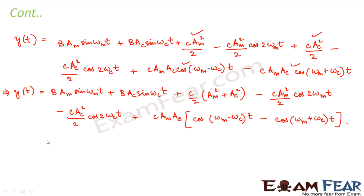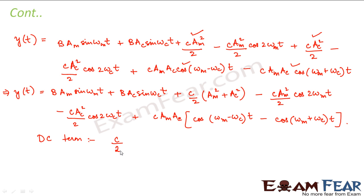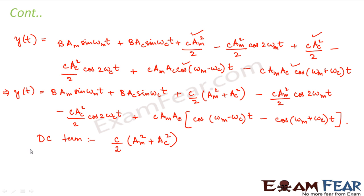Looking at this output, what are the DC terms — the terms which do not involve sine or cosine? The only term that does not involve sine or cosine is (c/2)(AM² + AC²). So we can say the DC term — that is the direct current component — is (c/2)(AM² + AC²). This is the only DC term in this output; all the rest are sinusoids.